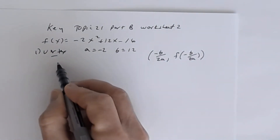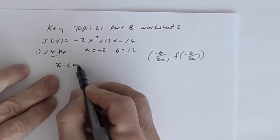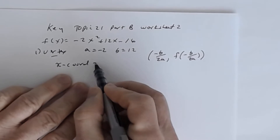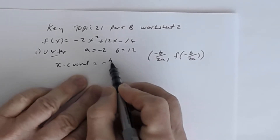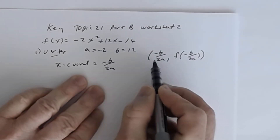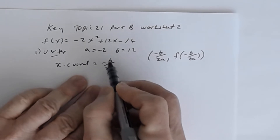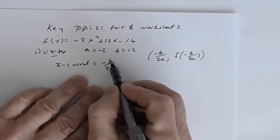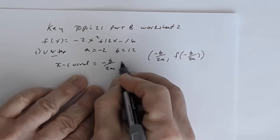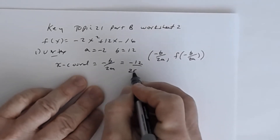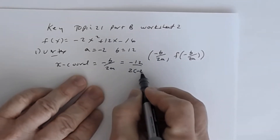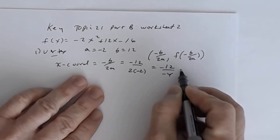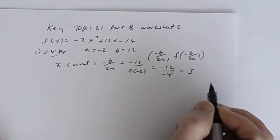Now let's find the x-coordinate of the vertex. The x-coordinate is -b divided by 2a. Remember, this says the opposite of b. So b is 12, then the opposite of 12 is -12, divided by 2 times a, and a is -2. So I get -12 divided by -4, which is a positive 3.